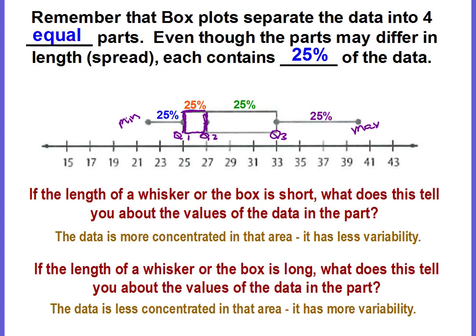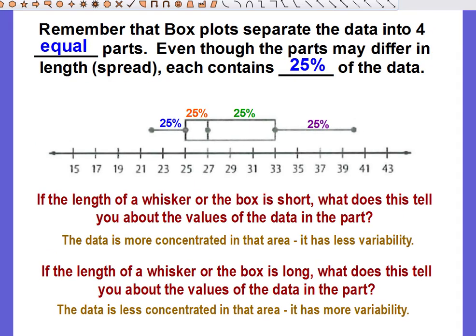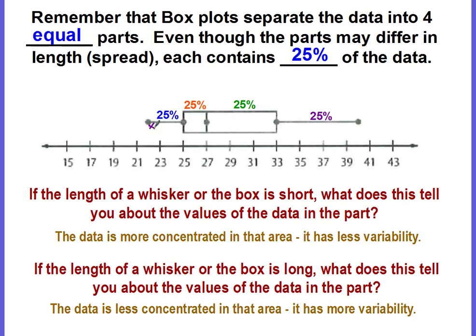Let me put this another way. Each part represents 25% — the same amount of data. For example, if I have five pieces of data, they can be really close together or spread out, but either way there are still only five pieces. It's just the concentration — are the values really close together or really spread apart? That's what the box plot is telling us.